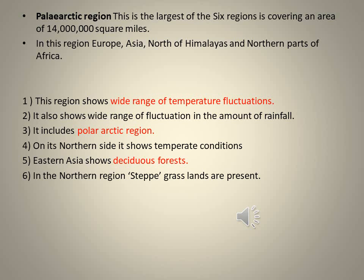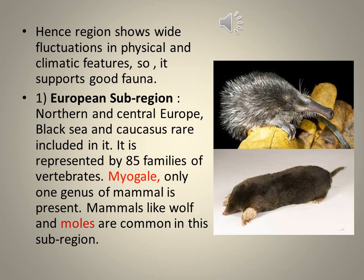Coming to the Palearctic region — the largest of the six regions, covering an area of 14 million square miles. It includes Europe, Asia north of the Himalayas, and the northern parts of Africa. This region shows a wide range of temperature fluctuations and wide variations in rainfall because the area is so large. It includes polar Arctic regions with snow in the north, deciduous forests in eastern Asia towards Japan and China, and steppe grasslands in the northern parts.